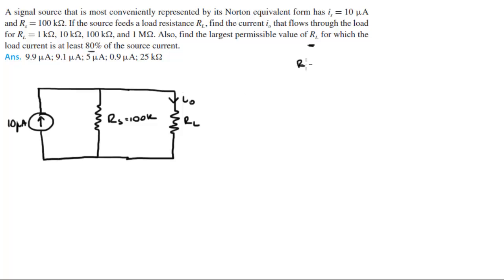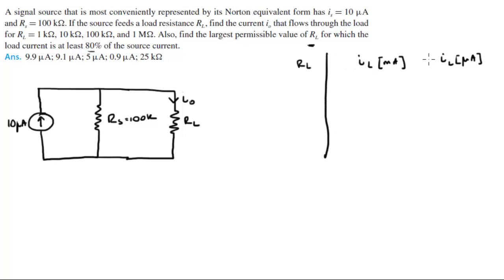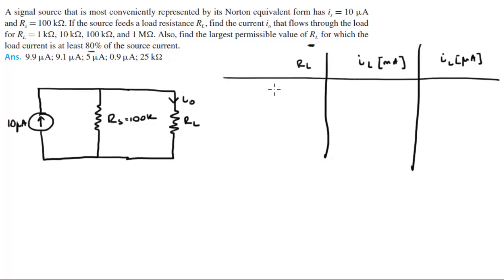Let's say RL and IL in milliamps. The different values for RL are: 1k, 10k, 100k, and 1 megaohm — I'm going to write 1 mega as 1000k. Whenever you're building tables like this, it's good to be consistent with the units and also with the formula so you don't get confused.